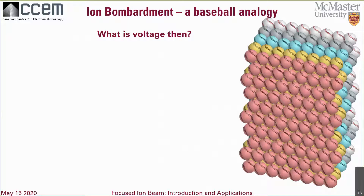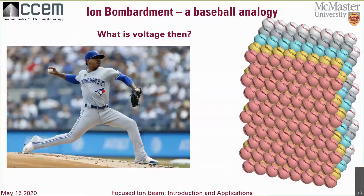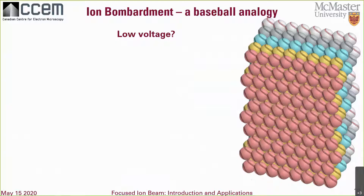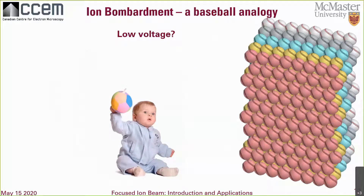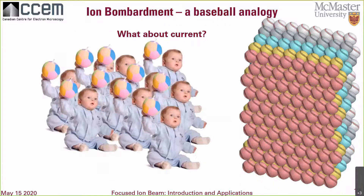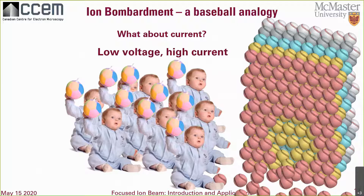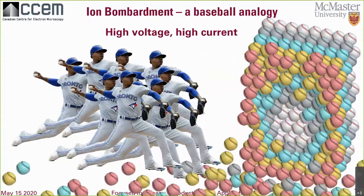The ion beam can be accelerated to different voltages. A medium voltage is a decent throw. High voltage is a major league fastball throw — the damage goes deeper and more balls are broken out per throw. Low voltage is a small and inaccurate impact — only a few balls break out, a few layers are affected, pretty gentle. What about current? High current is like many throwers at once. High voltage, high current is devastatingly fast — the wall is quickly destroyed. This is basically analogous to high current, high voltage in FIB.